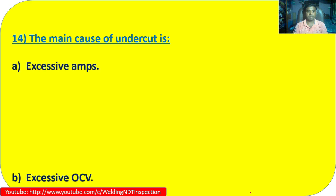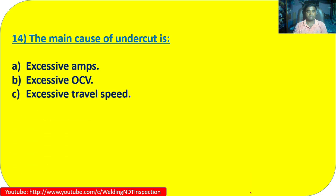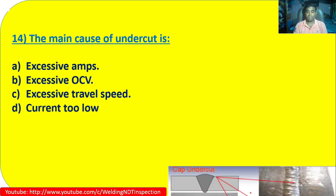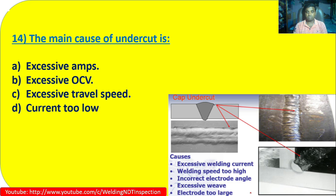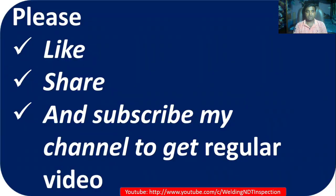Question 14: The main cause of undercut is: A) excessive amperes; B) excessive OCV; C) excessive travel speed; D) current too low. Excessive welding current is a primary cause of undercut. Other causes include high welding speed, incorrect electrode angle, excessive weave, and electrode tool arc. Option A — excessive amperes — is correct. These 14 questions are important for those working as welding inspectors or preparing for the welding inspector exam. Please like, share, and subscribe. See you in the next video.